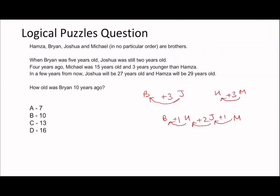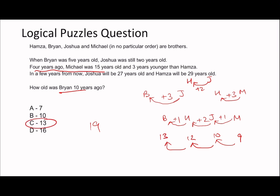So how old is Brian 10 years ago? It says four years ago Michael was 15, so right now Michael is 19, meaning 10 years ago Michael was nine. Plus one for Joshua is 10, plus two is 12, plus one is 13 — Brian was 13 ten years ago. Like I said, dead simple question once you understand the relationships.